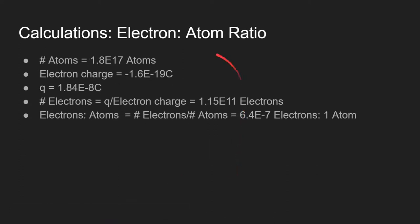To estimate the electron-to-atom ratio, I found the number of electrons by dividing total charge by the charge of one electron, and divided number of electrons by number of atoms for this value.